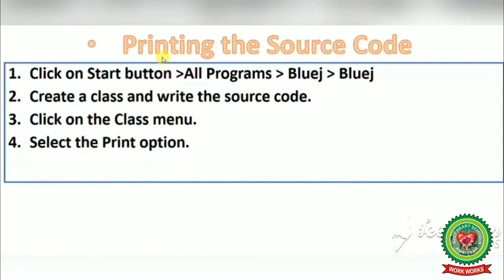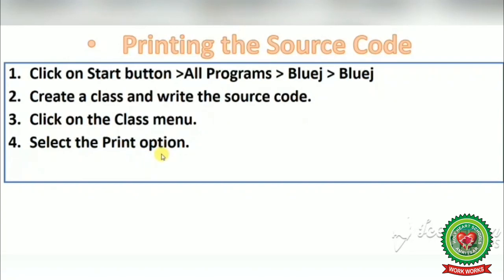The next topic is printing the source code. We have already discussed how to save the output. Now if you want your program to be saved for future use, you can print the source code. The steps are: click on Start, All Programs, BlueJ, BlueJ. Create a class and write the source code — source code means our program. Click on the Class menu and select the Print option. Just like we print other assignments, we can print our source code as well for a hard copy.